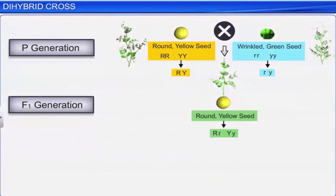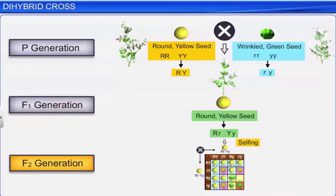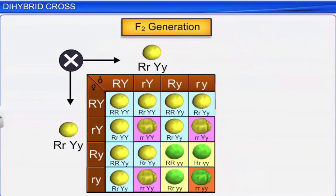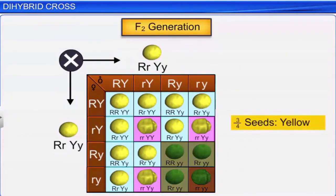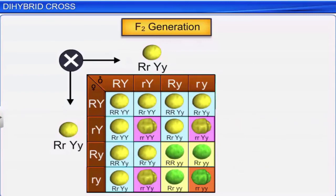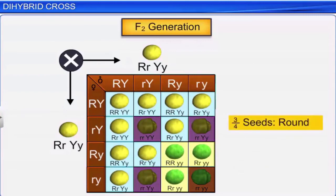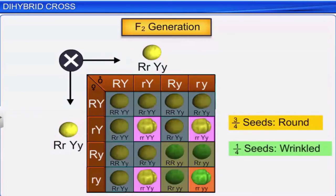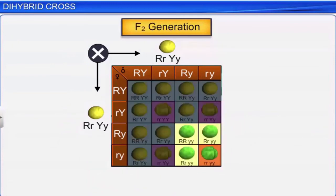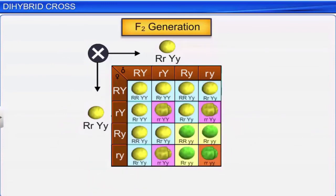Mendel further self-pollinated the F1 generation plants to produce F2 generation plants. He found that three-fourths of the seeds were yellow, while one-fourth was green. Similarly, three-fourths of the seeds were round and one-fourth was wrinkled. Therefore, the yellow and green color had segregated in the ratio 3:1, similar to the results obtained in a monohybrid cross.